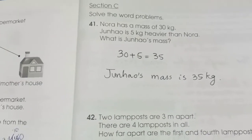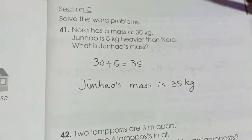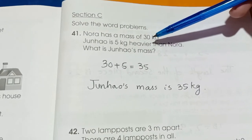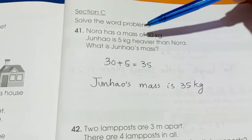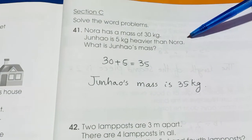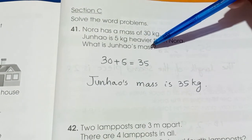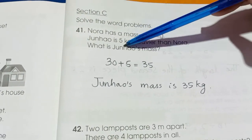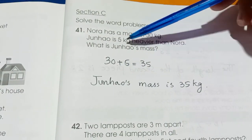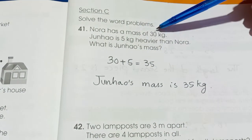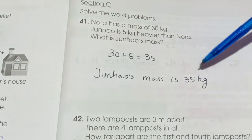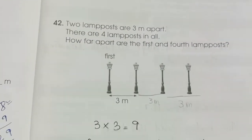Section C, Question 41: Solve the word problems. Nora has a mass of 30 kg. Junhao is 5 kg heavier than Nora. So we add: 30 plus 5 equals 35. Junhao's mass is 35 kg.